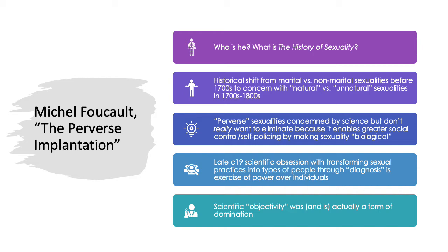In the section you read for today, he's focusing on what is new and unique in the social discourse about sexuality in the 1700s through the 1800s — the period we're studying. Something he's interested in is the historical shift from an obsession, before the 1700s, with marital versus non-marital sexualities. When you look at religion and legal codes before the 1700s, what they're most obsessed with is actually marital sexuality — in other words, what husbands and wives can and cannot do with each other.